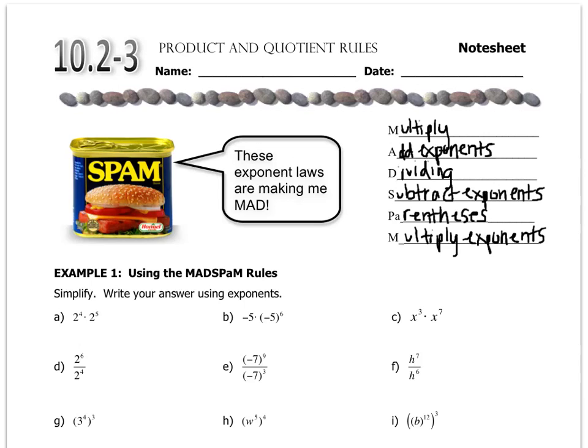You also have to keep in mind that you always keep the base. You never change the base. Additionally, as you should already know, when a number doesn't have an exponent, it's a 1. So for example, 3 is the same as 3 to the 1.